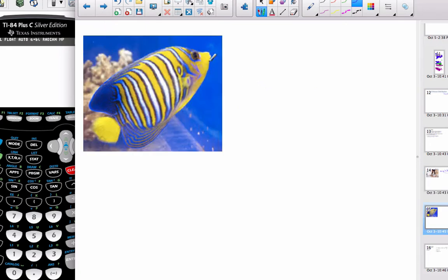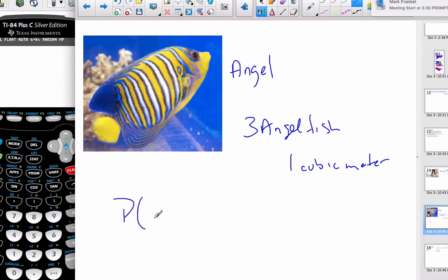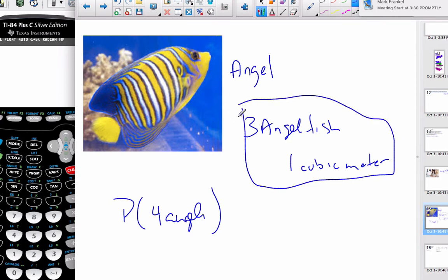Another possible example could be angelfish. Imagine there are three angelfish in one cubic meter of water. Then it could be, what's the probability that there are exactly four angelfish in a cubic meter of water? Again, this is a rate over an area or interval of some kind, and that defines a Poisson distribution.